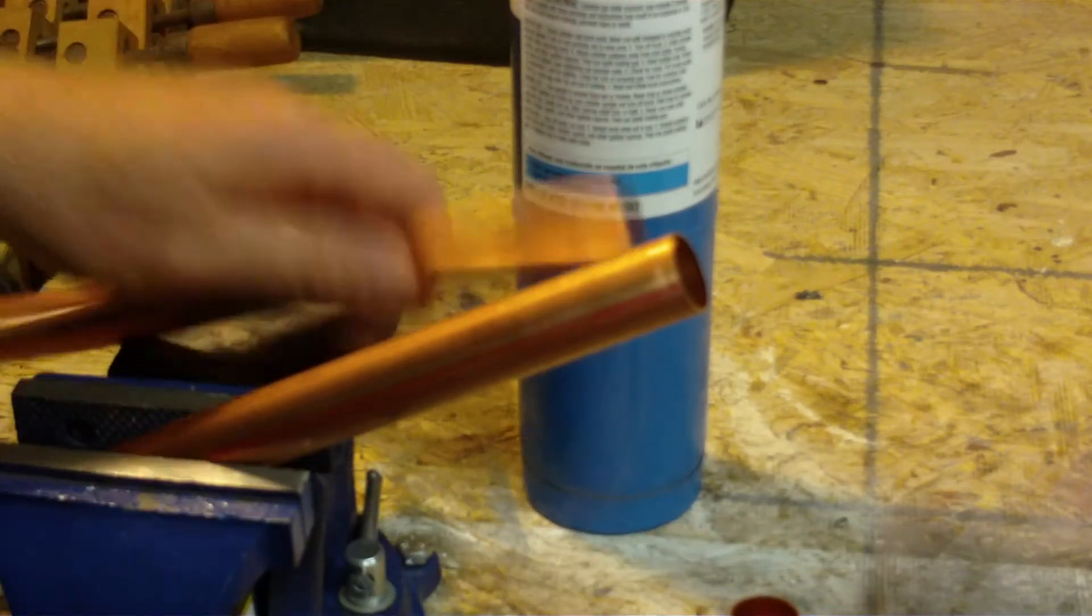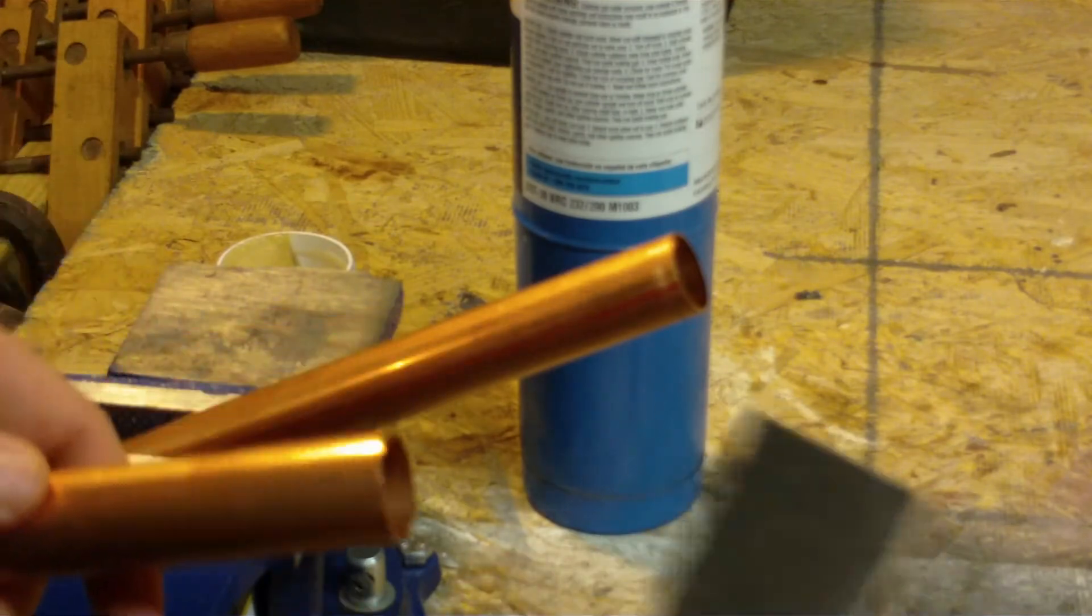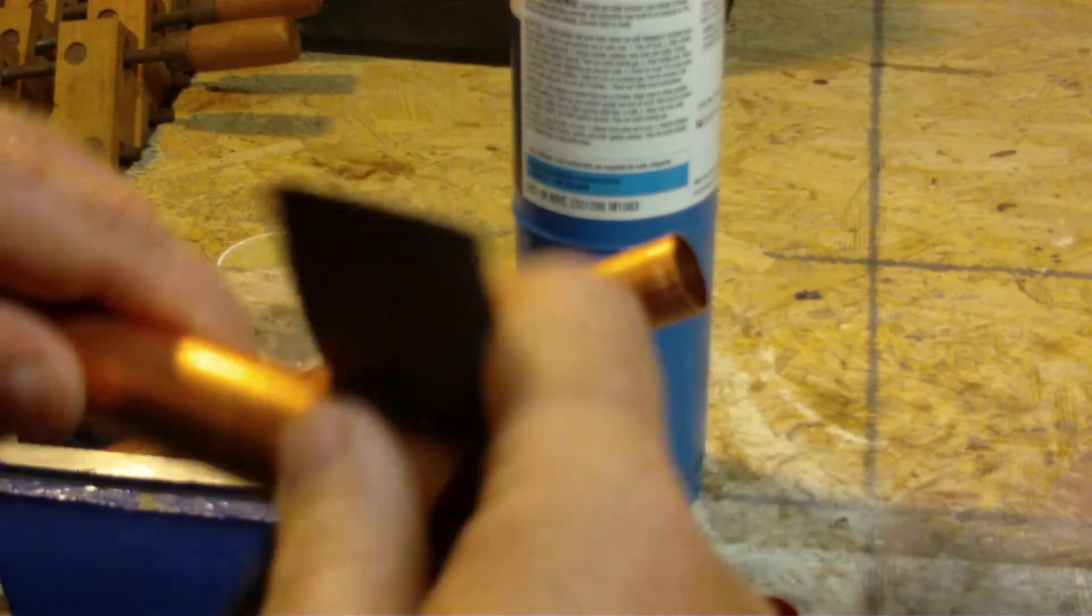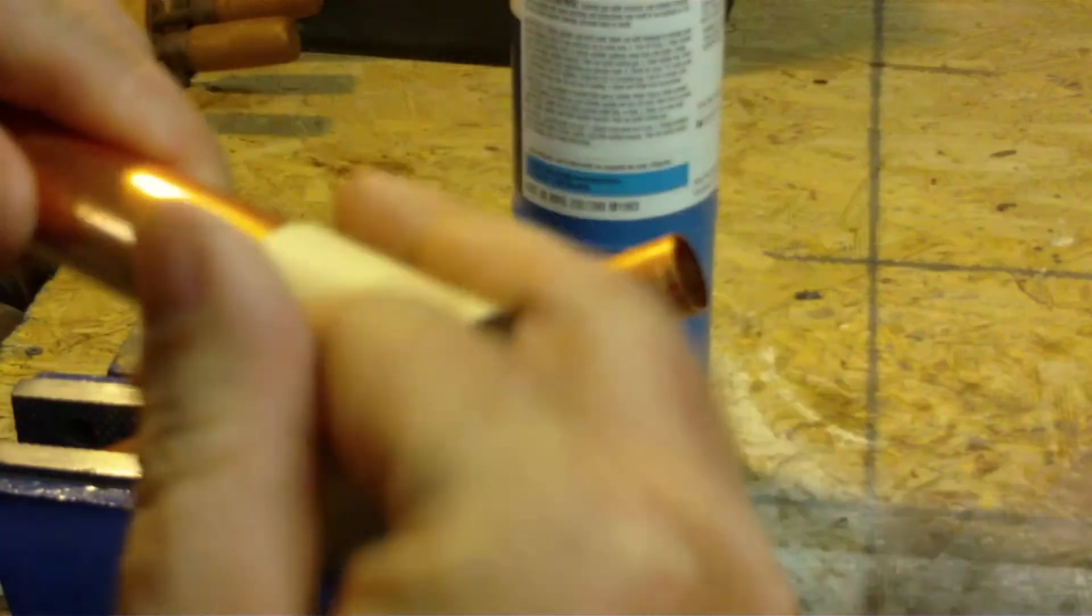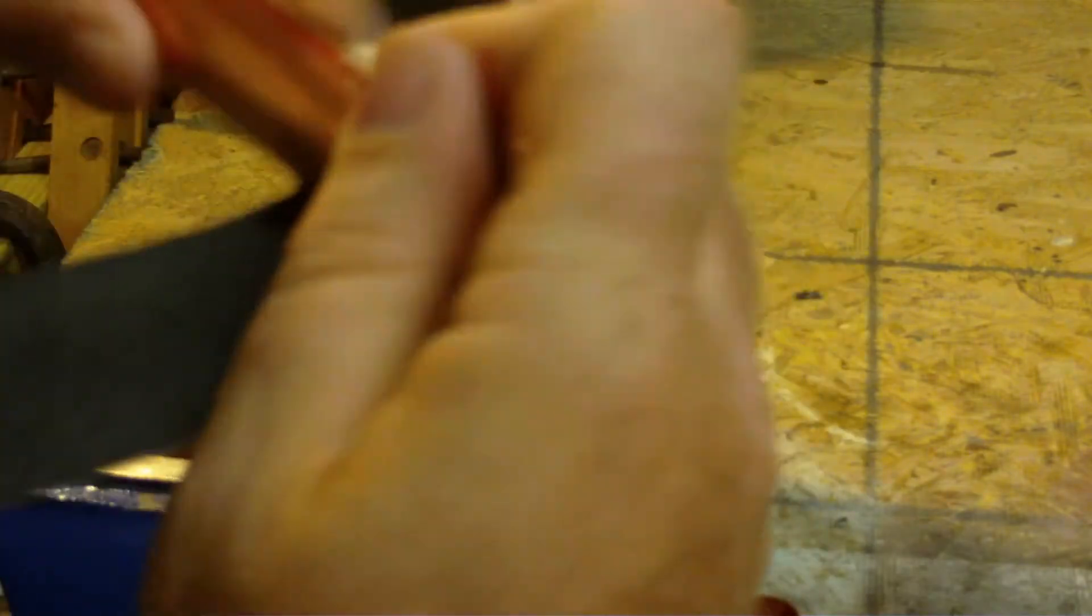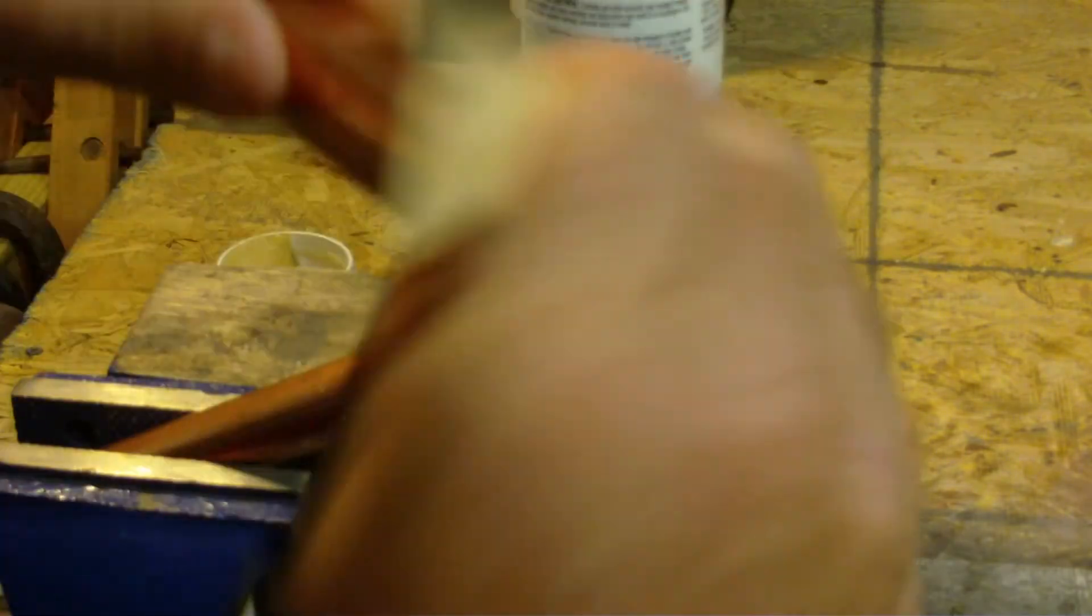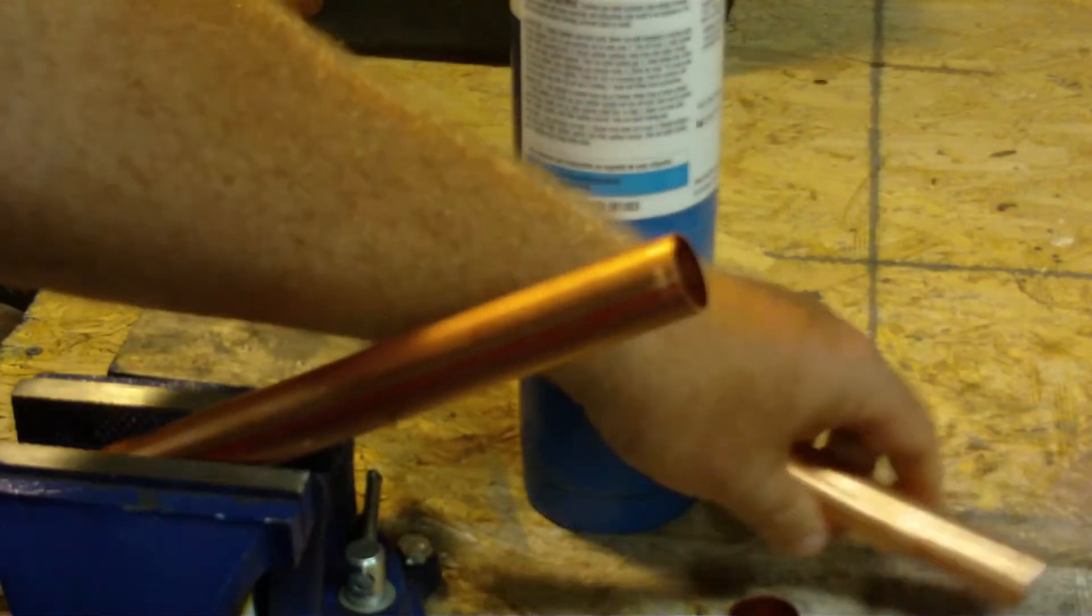First thing you want to do is prepare your surfaces before you solder. You want to take some heavy grit sandpaper and rough up the edges a little bit, kind of sand it up. This gives it a nice rough surface for the solder to get into and hold onto. You want to do all your surfaces.